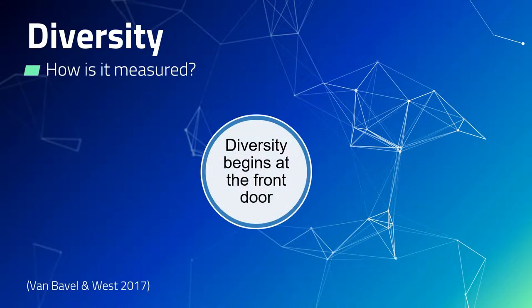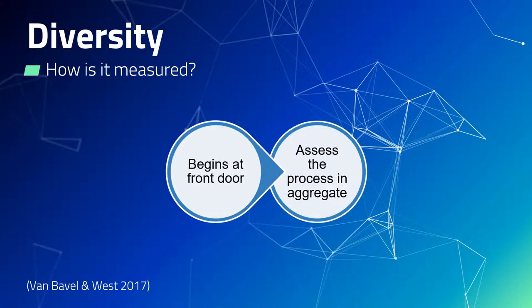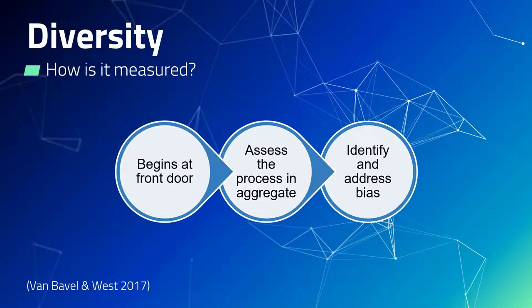How is diversity measured? It is important to understand that diversity begins at the front door, as per Google's example. In order to identify if our behaviour and decision making is providing for diversity appropriately, it is important that we assess the process in aggregate. Van Pavel and West discuss, for instance, if 50% of job applicants are women and no women progress to the final interview stage, the suggestion would be that bias is being introduced earlier in the process. What is possible is for the leader to use the aggregate results to assess for bias and use that learning to address those biases moving forward.